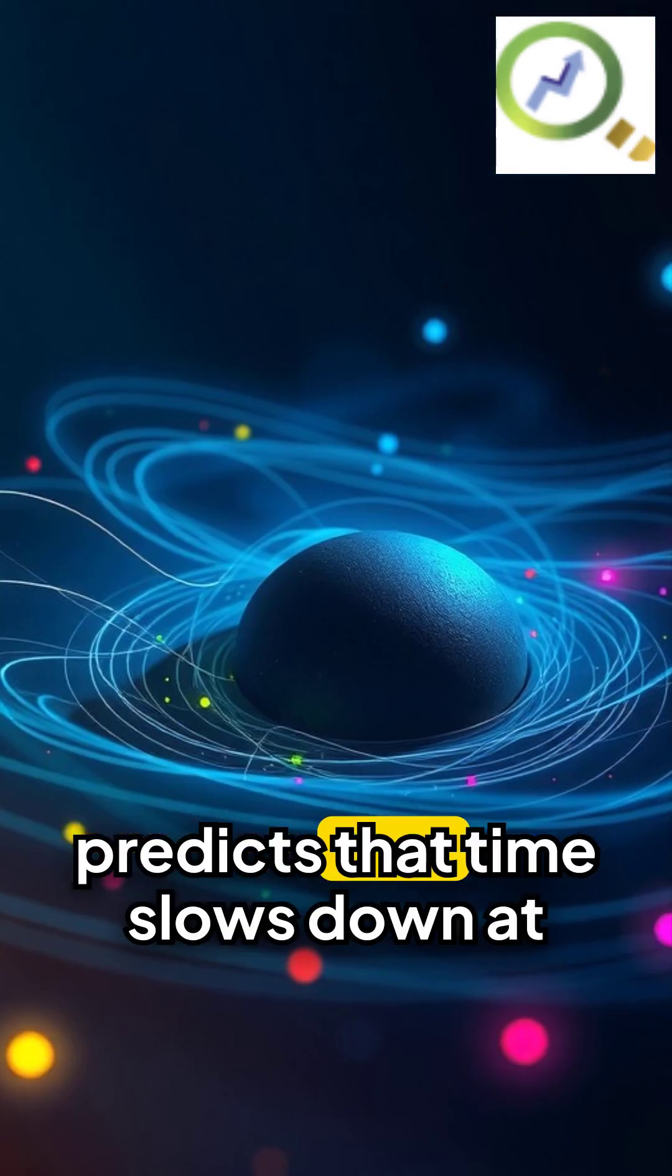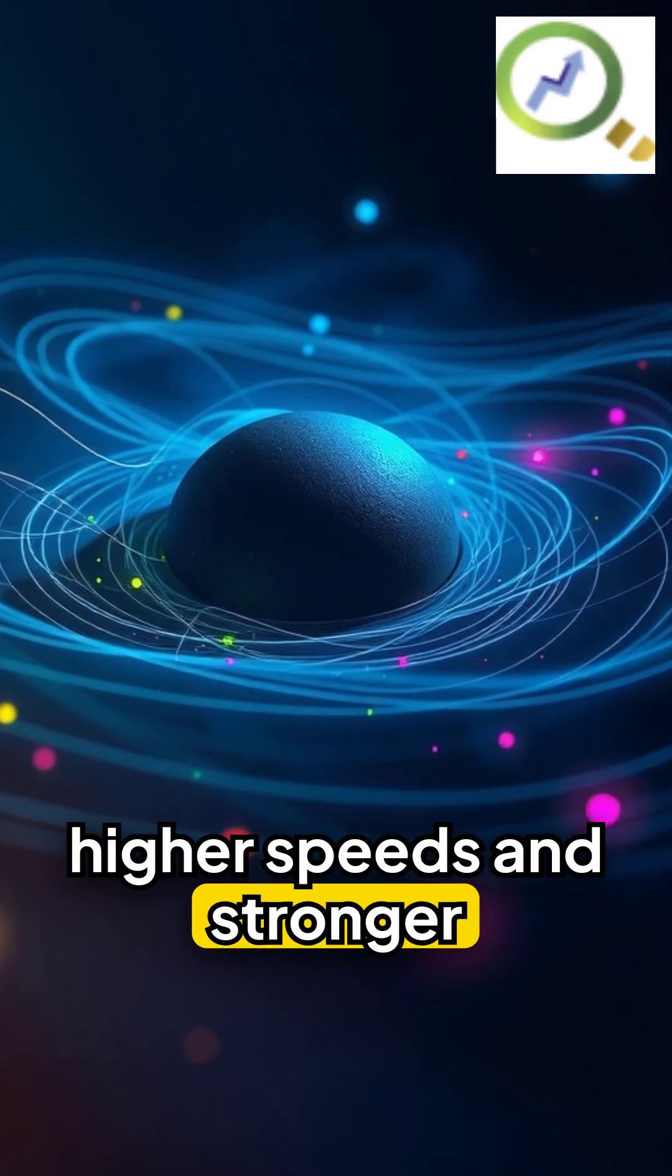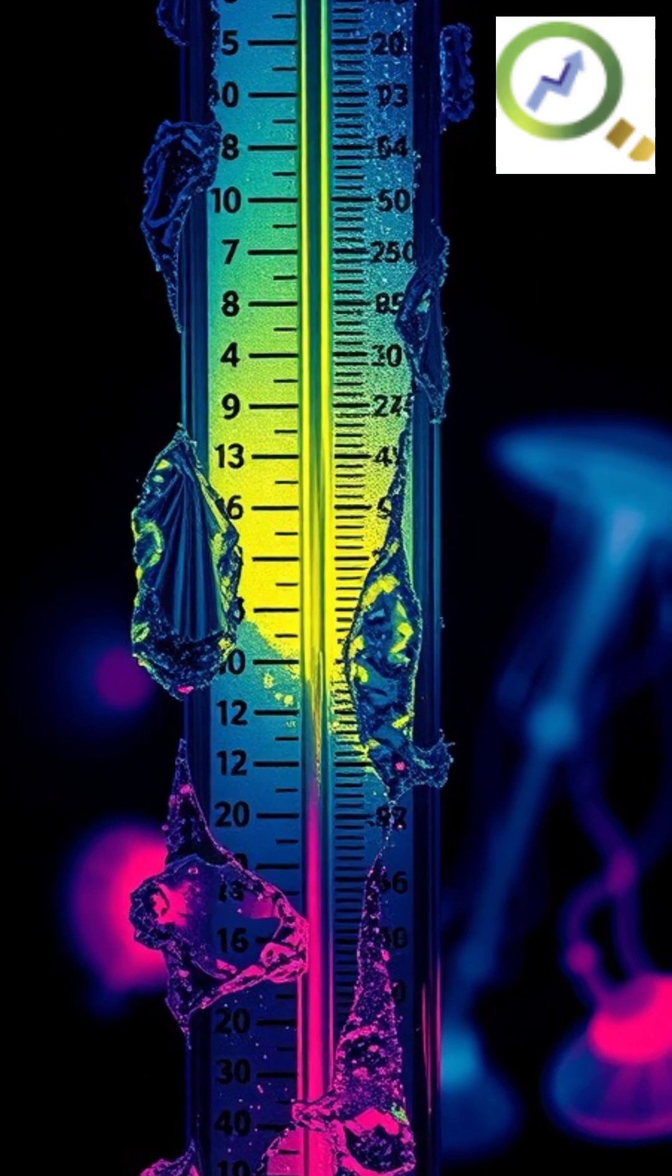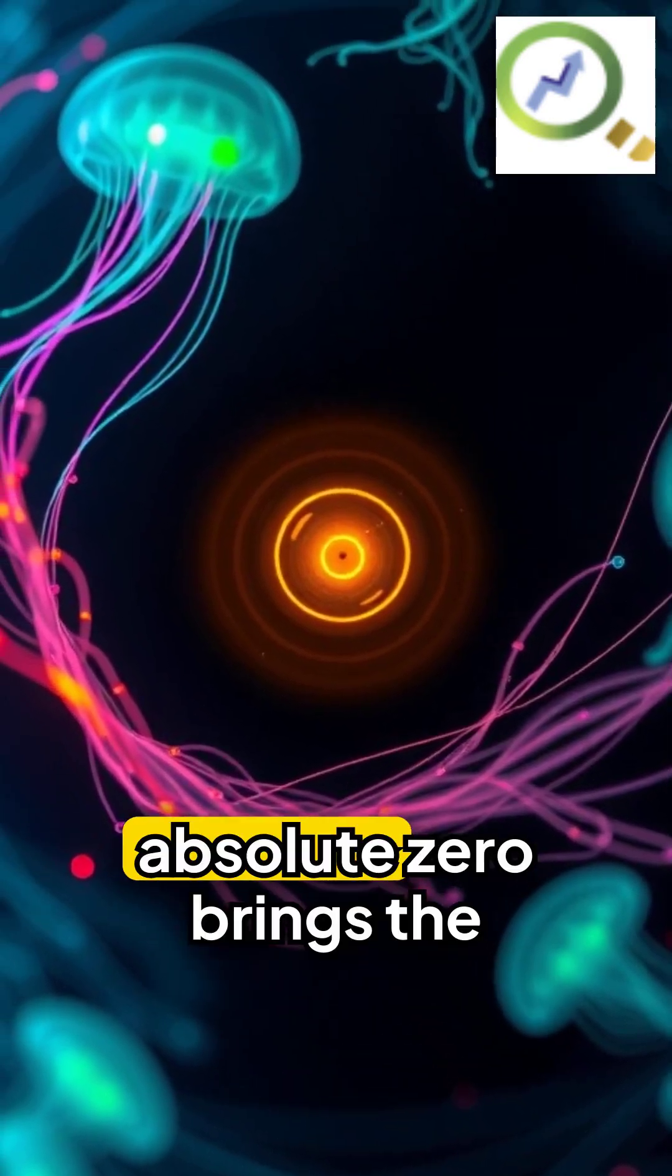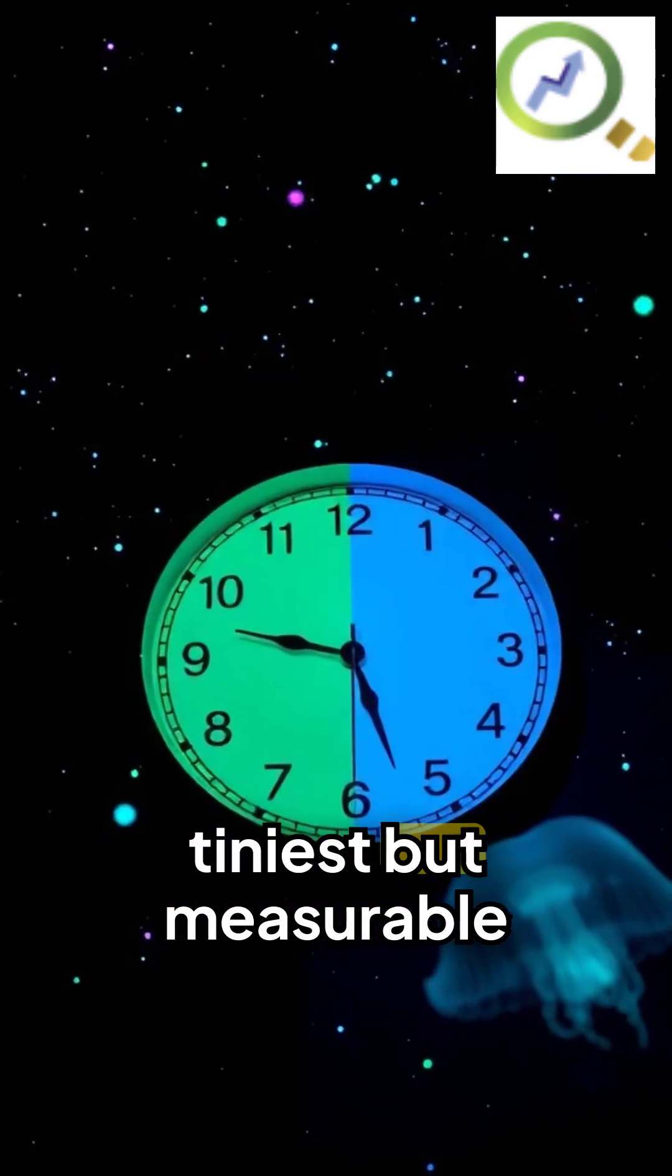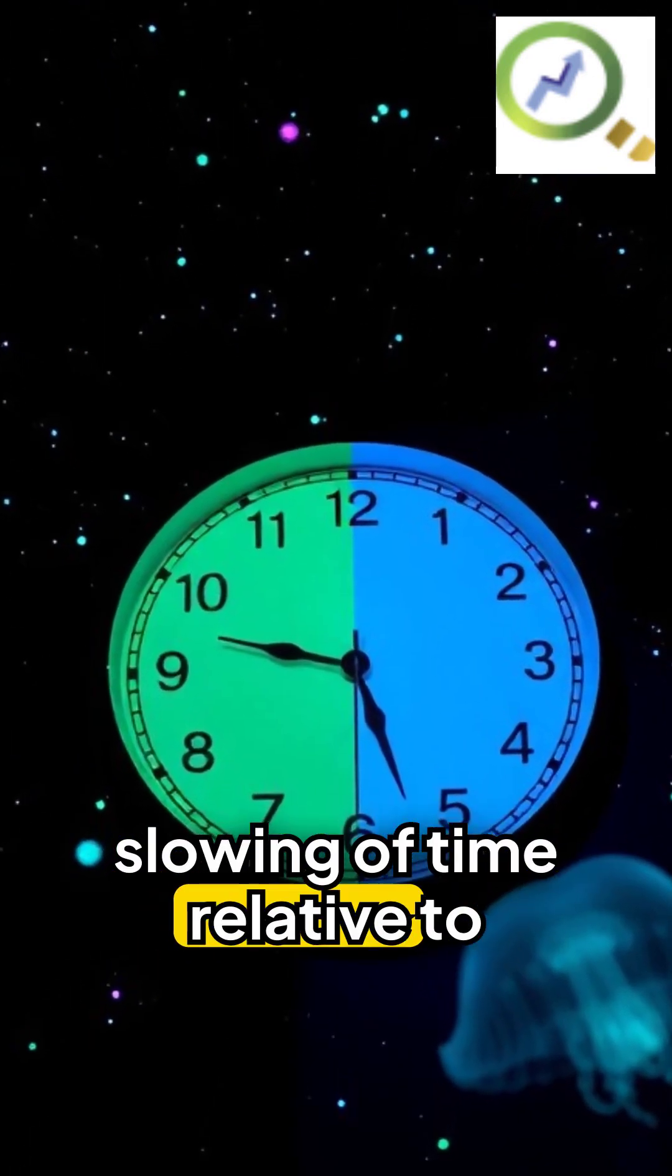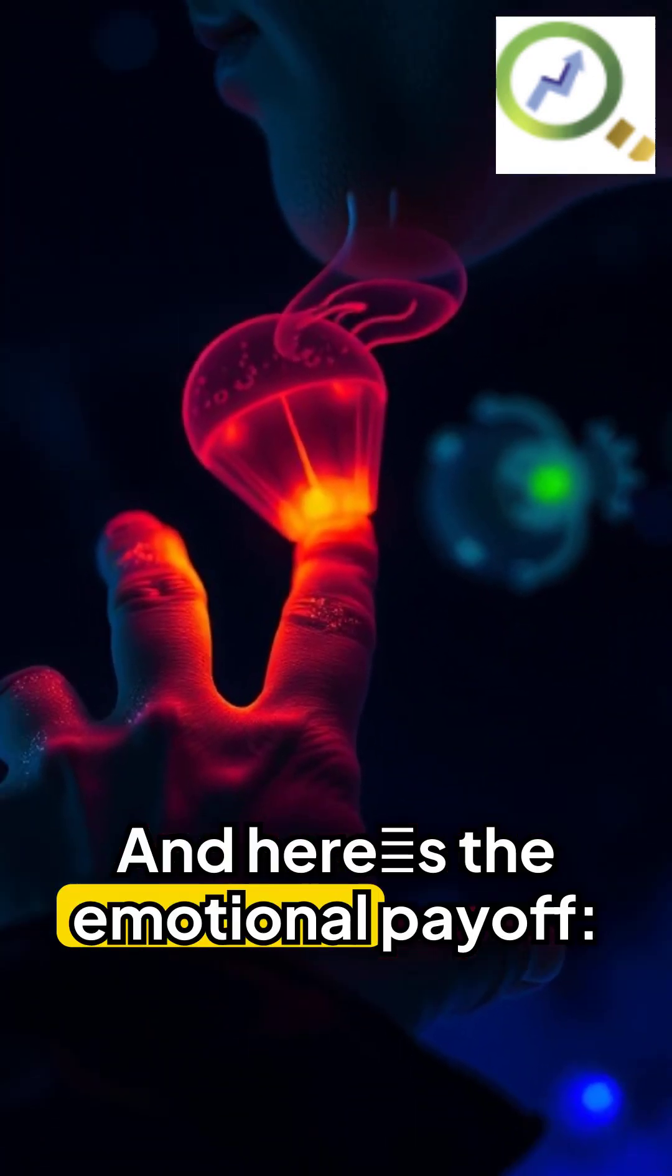Einstein's theory of relativity predicts that time slows down at higher speeds and stronger gravitational fields. While the effect is negligible at everyday temperatures, approaching absolute zero brings the tiniest but measurable slowing of time relative to a normal observer.